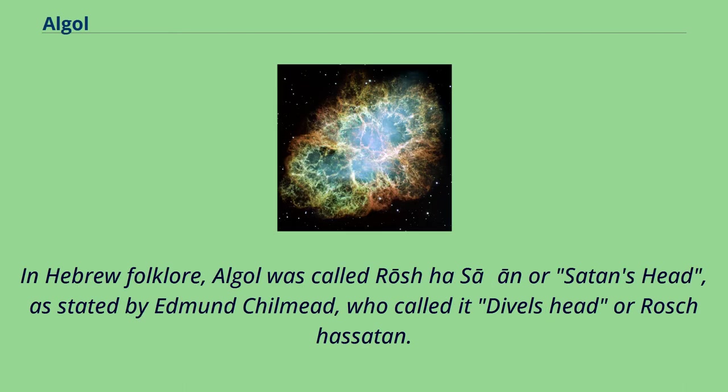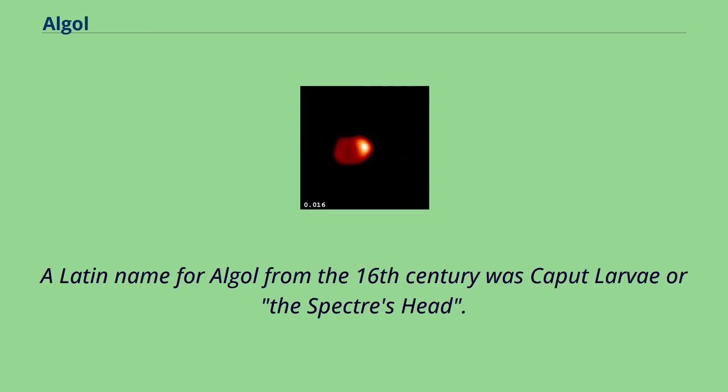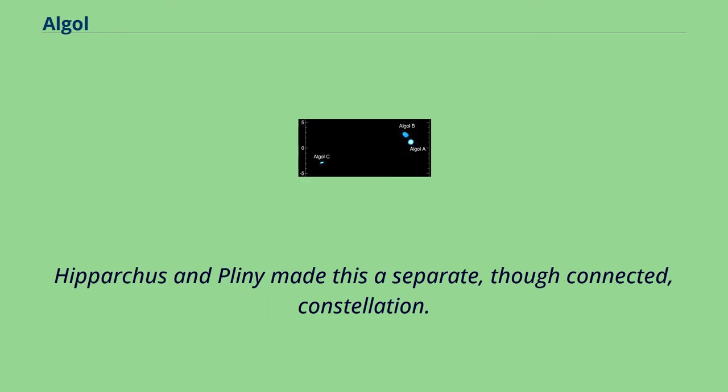In Hebrew folklore, Algol was called Rosh ha Satan or Satan's head, as stated by Edmund Chilmead, who called it the Devil's head or Rosh ha Satan. A Latin name for Algol from the 16th century was Caput Larvae or the Specter's head. Hipparchus and Pliny made this a separate, though connected, constellation.